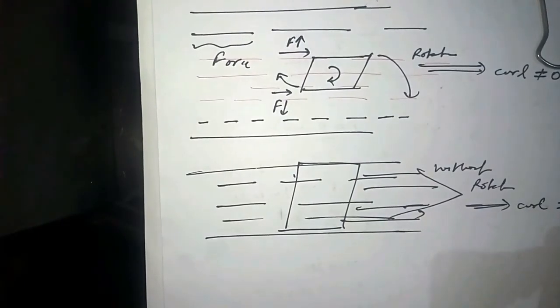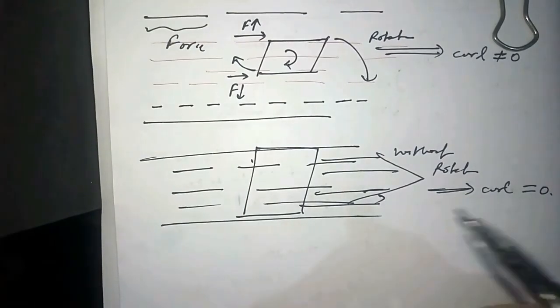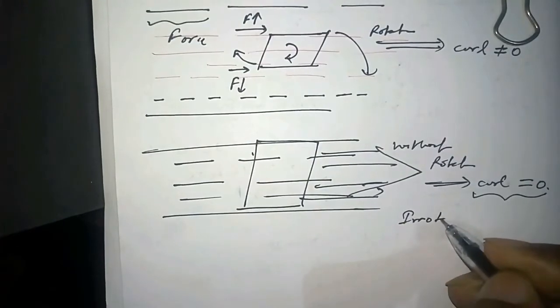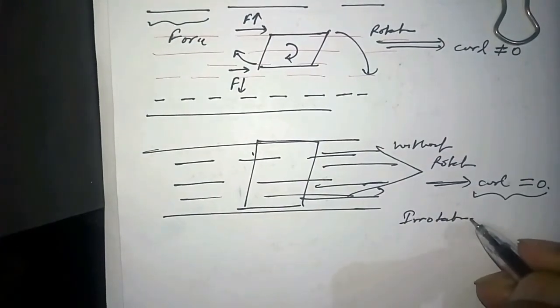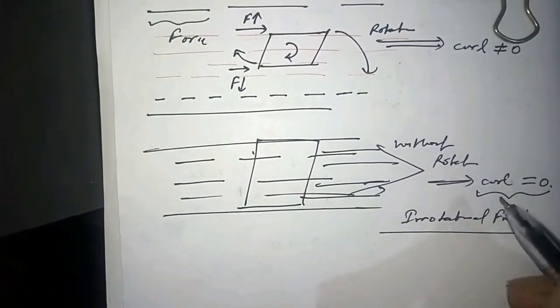When curl is equal to zero, this case is also known as irrotational field.